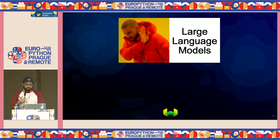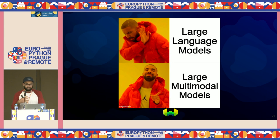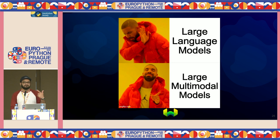A lot of people are interested in large language models, but now we're increasingly seeing companies like Google, Anthropic, and OpenAI move toward large multimodal models that can understand images, video, and audio files as well.